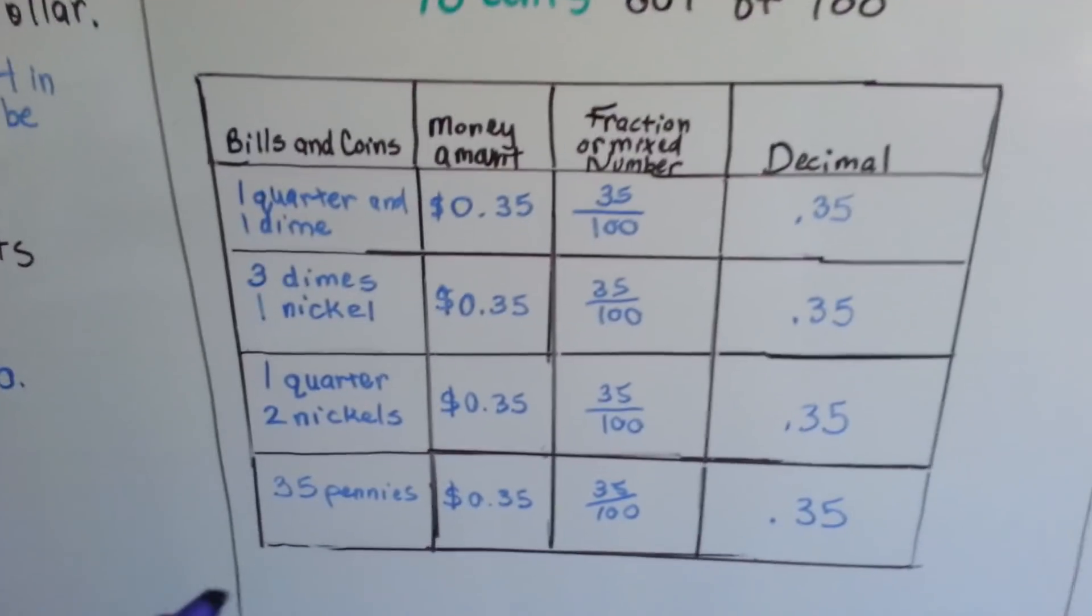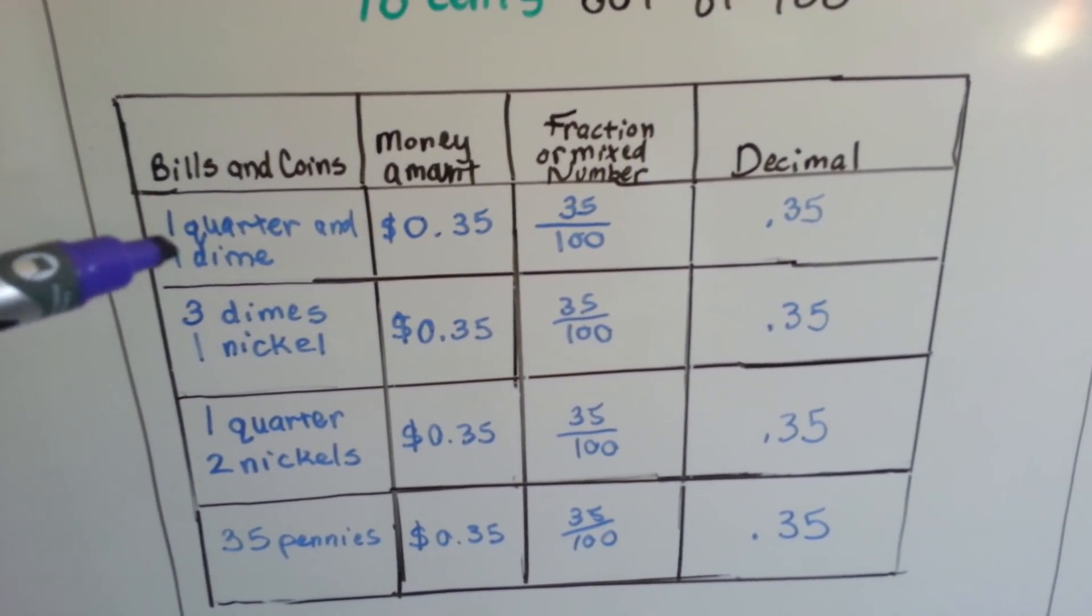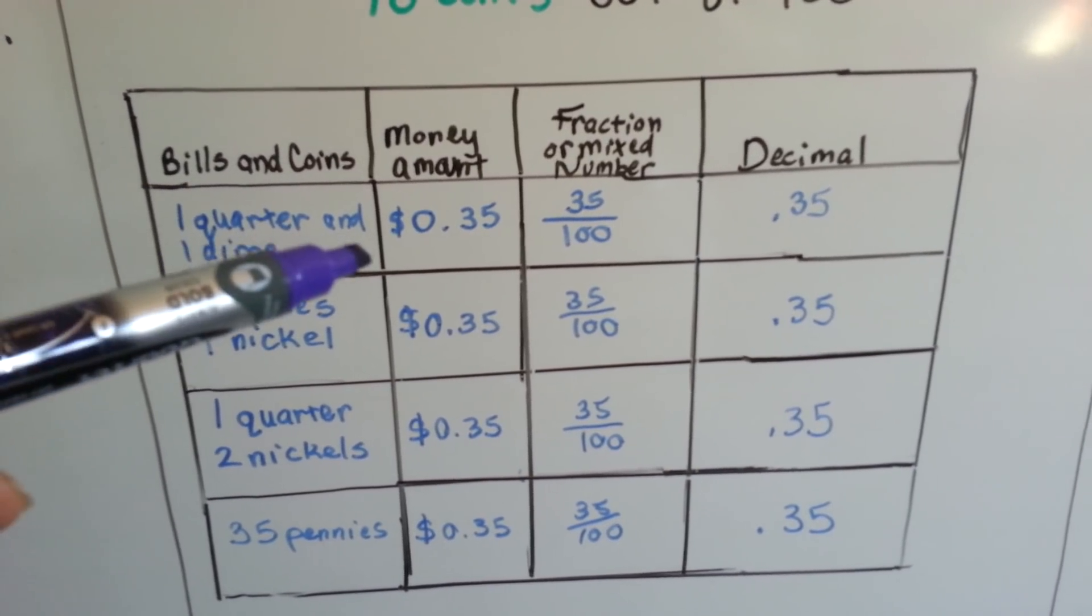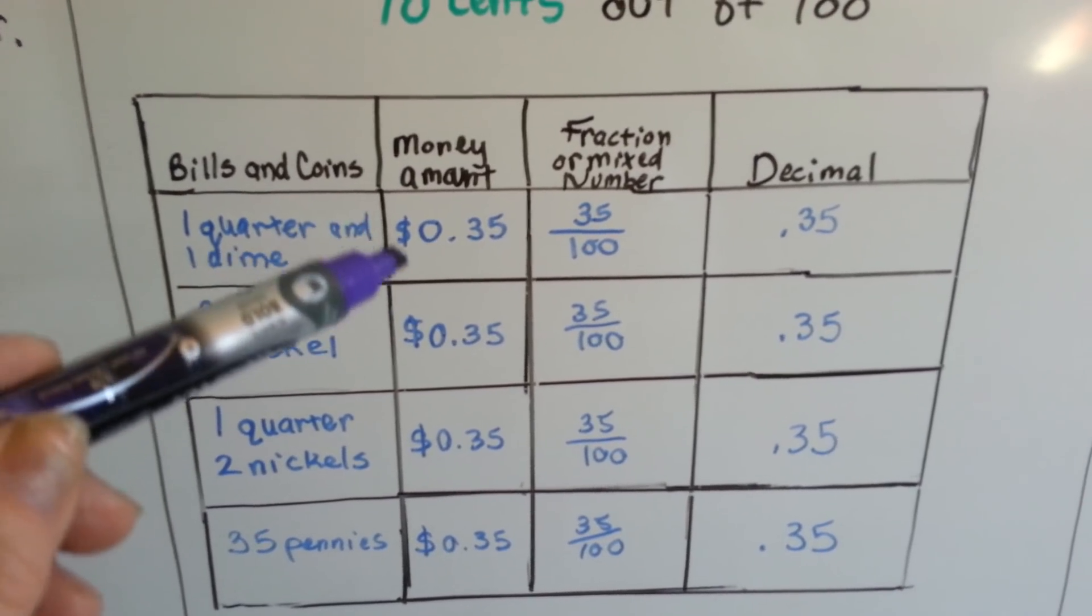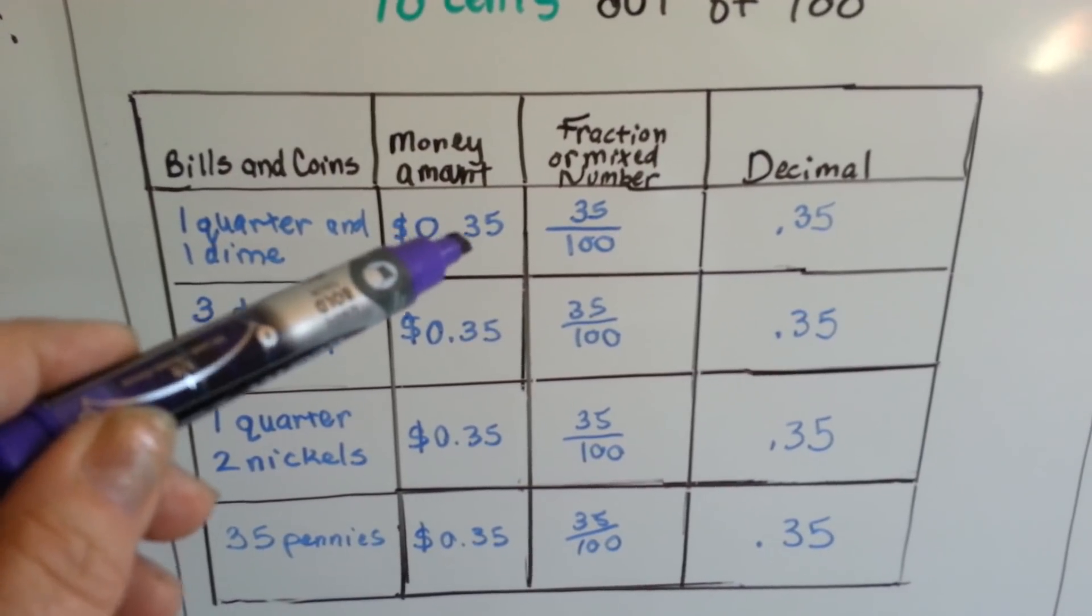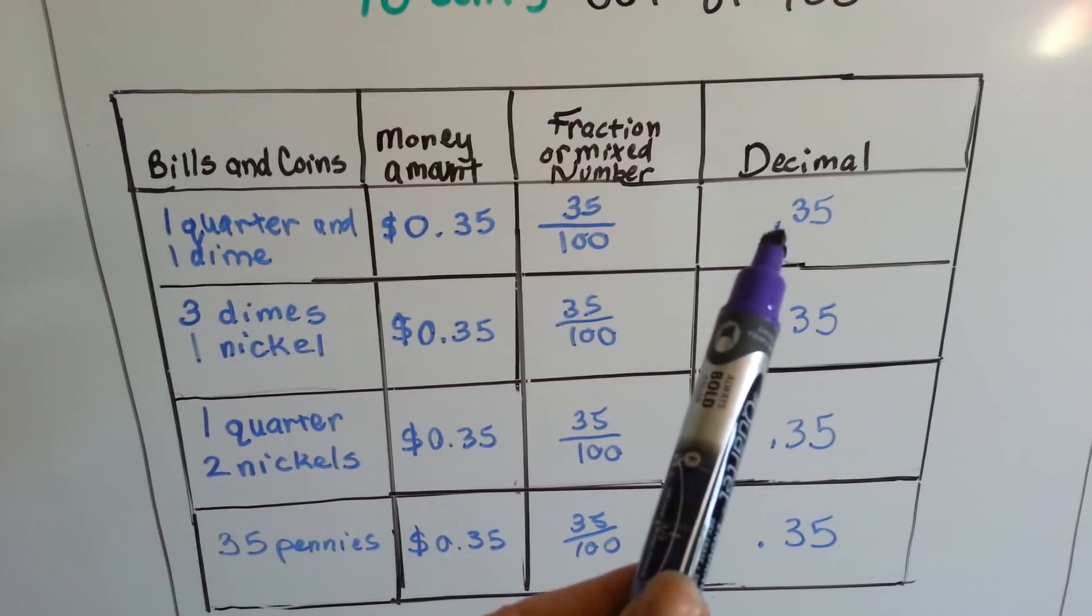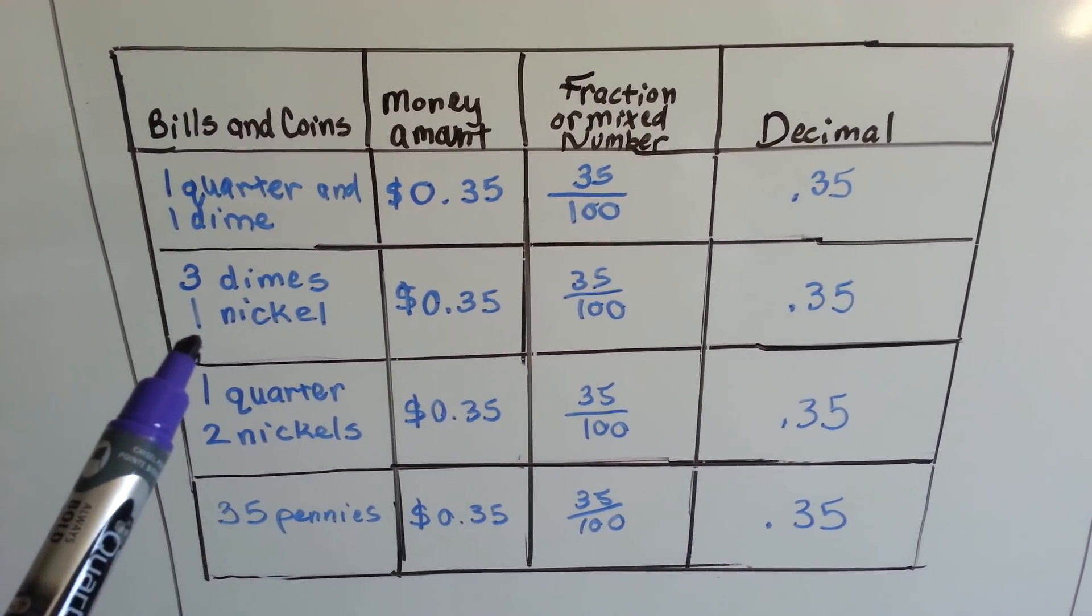So check out my little chart here. If we had one quarter and one dime, it would be 25 and 10. We would have 35 cents. It would be written as the dollar sign and then the .35. It would be 35 one-hundredths, and it would be written as .35 as a decimal.